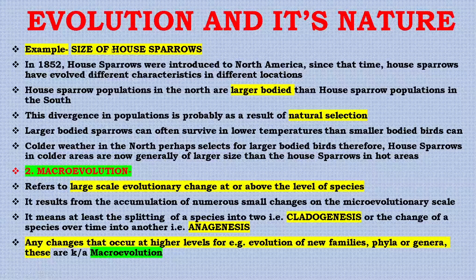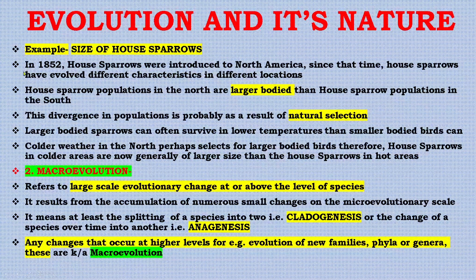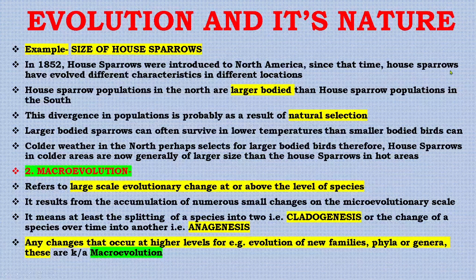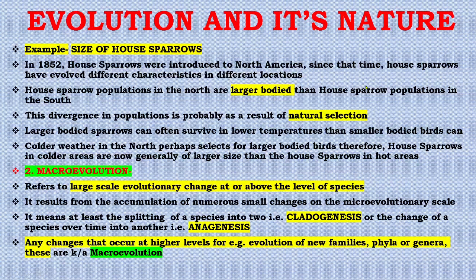A classic example of micro-evolution is the size of the house sparrow. In North America, house sparrows were introduced in 1852, and since that time they have evolved different characteristics in different locations. House sparrow populations in the northern region are large-bodied, while populations in the southern region are smaller.